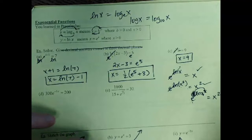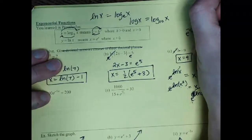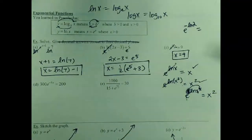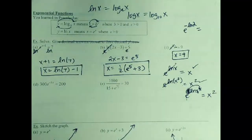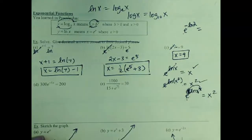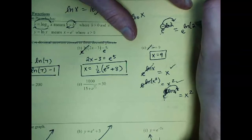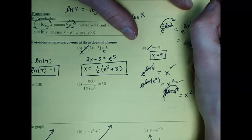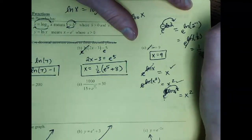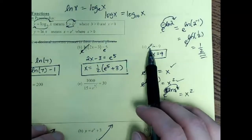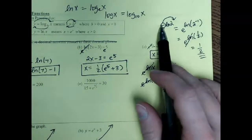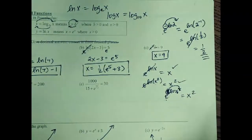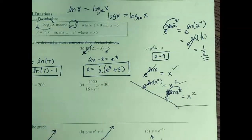Let's do one more example for something that may come up later. If I have e to the negative ln of 2, what does that boil down to? I've seen students get 2, negative 2, square root of 2 — all sorts of wrong answers. Since the e and the ln have something between them, you must use your property of logs to move it first. So I'd have e to the ln of 2 to the negative first power, which is e to the ln of one-half, which cancels to give one-half. If something's in the way — whether it's a 2 or a negative — you have to move it first using log properties.